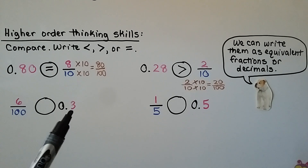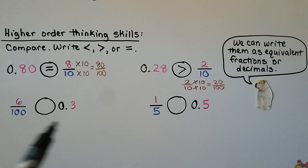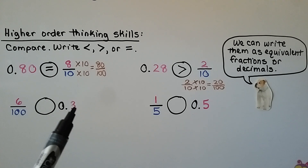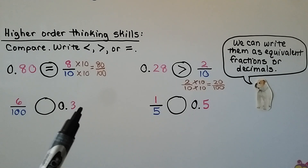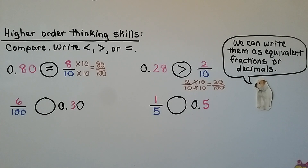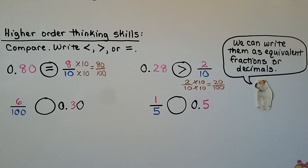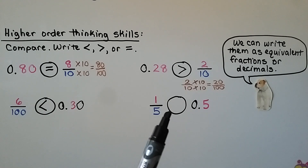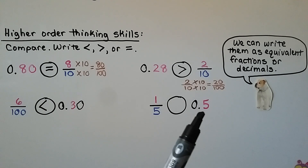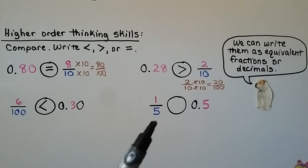For this one, we have six hundredths and three tenths. We can use scratch paper and make them equivalent, or we can think of three tenths with a zero in the hundredths place as thirty hundredths. Six hundredths is less than thirty hundredths, so we put a less than sign — it kind of looks like a slanted L for less than.